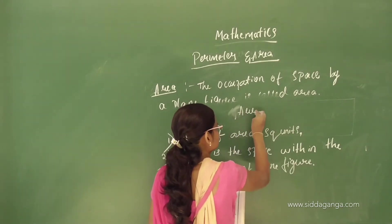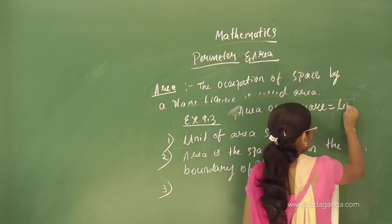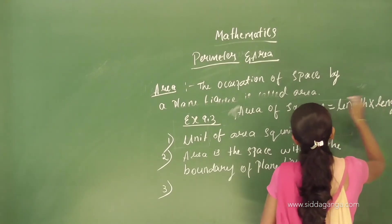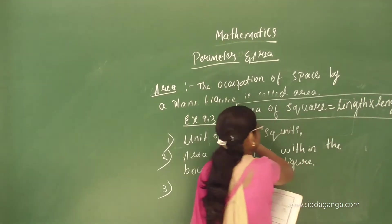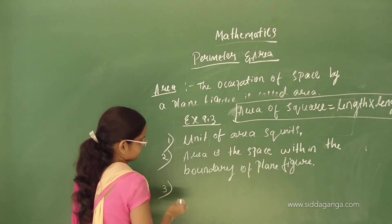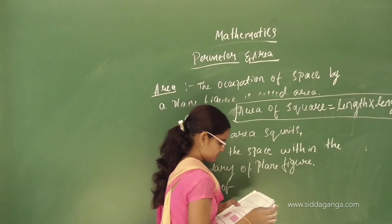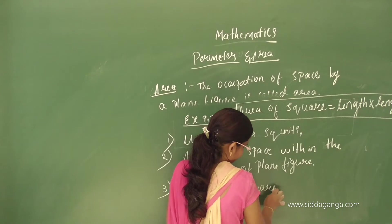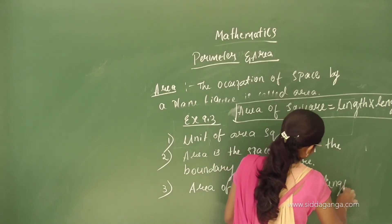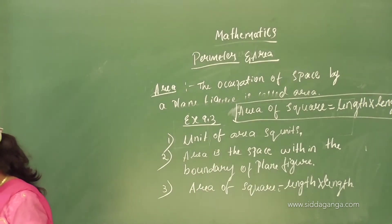Area of square is equal to length into length. For a rectangle it is length into breadth, but for a square it is length into length. Remember this formula. The units are the same, so the result is in square units.